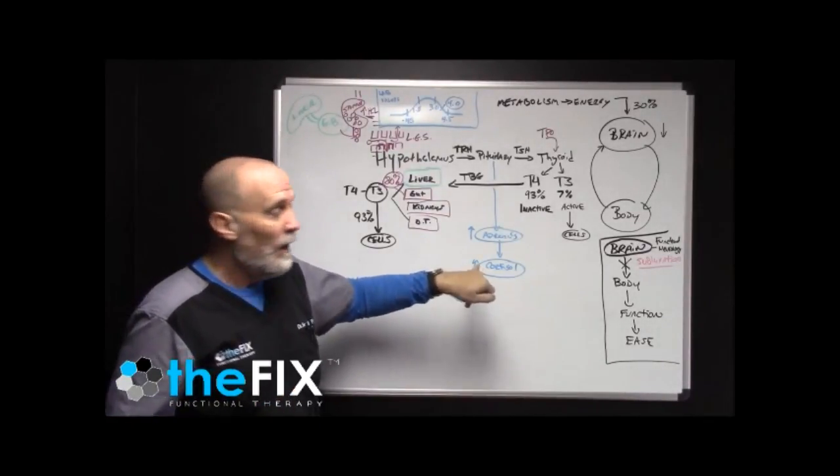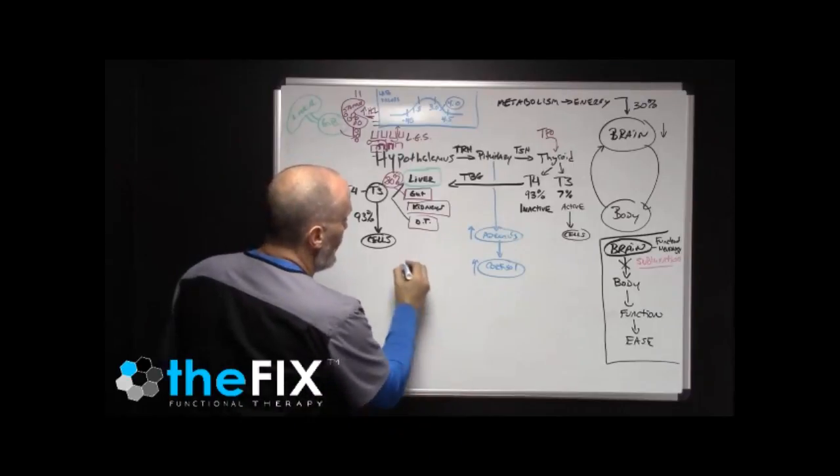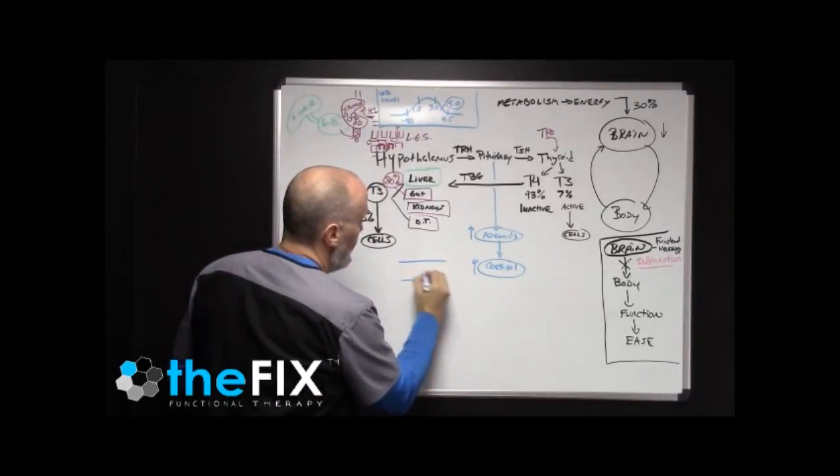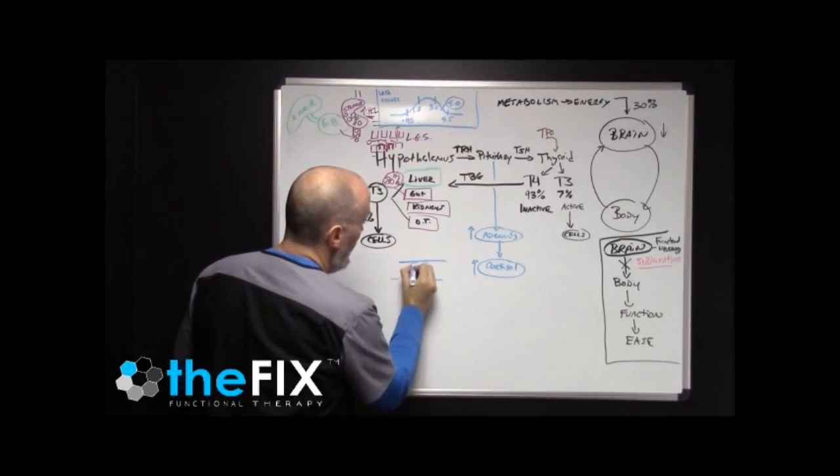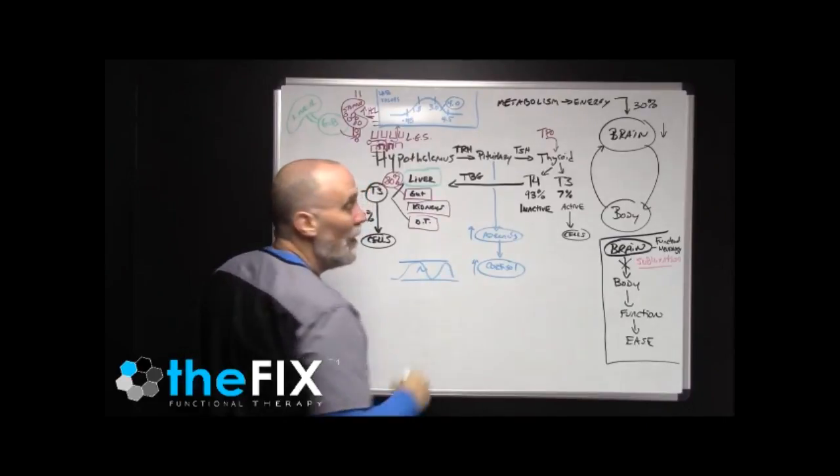When cortisol is elevated, cortisol pulls blood sugar with it. So your blood sugar metabolism, you have a normal range. You get hungry, you eat, blood sugar goes up and then it comes down and then it goes up and so on and so forth. That's your appetite.